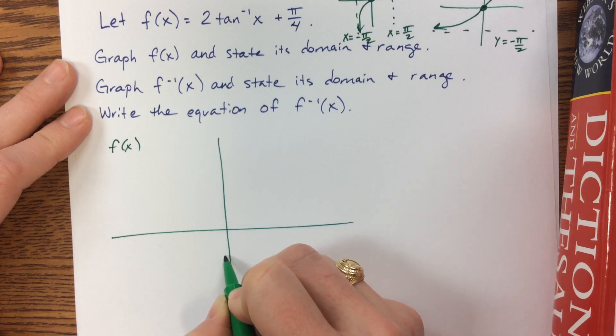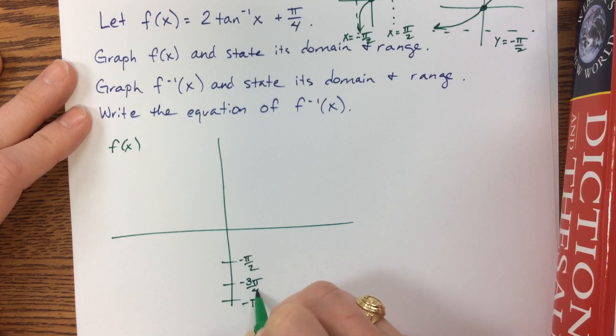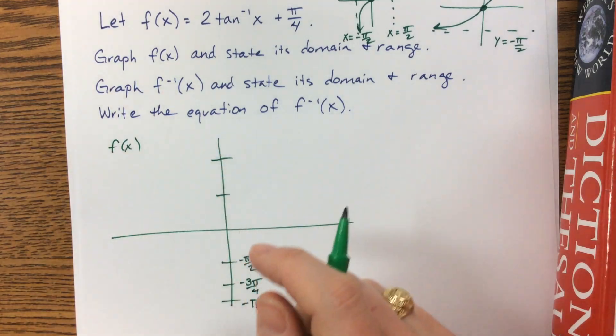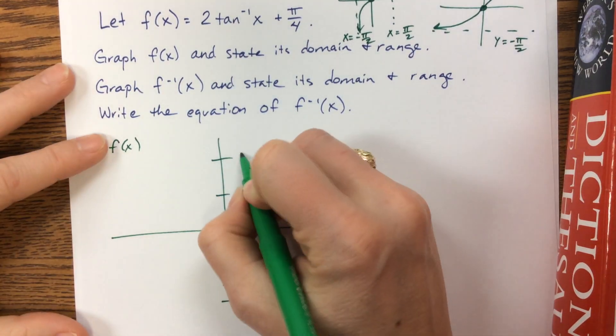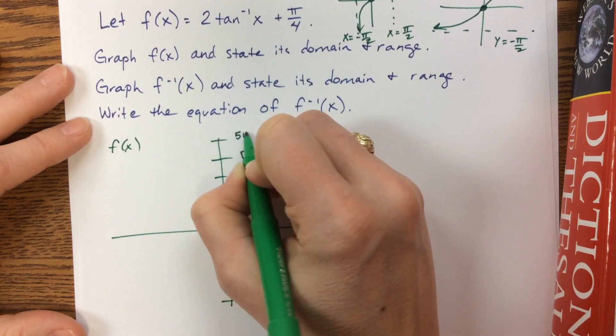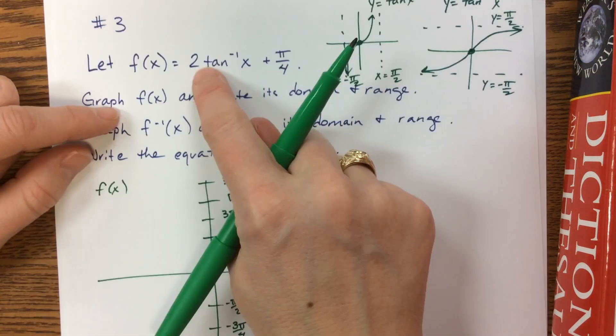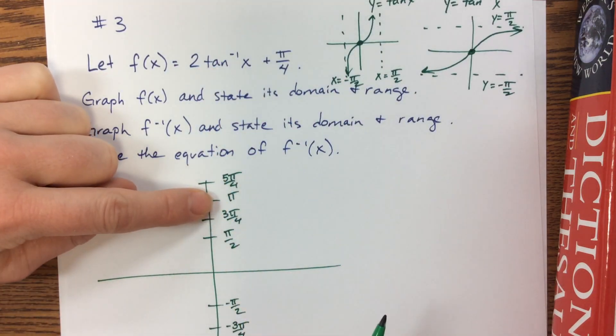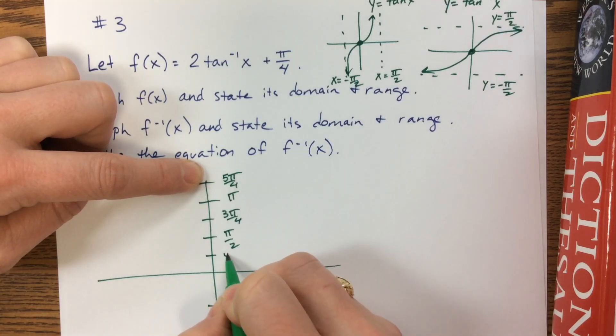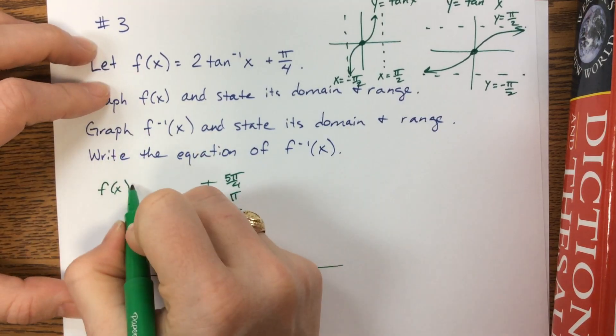If this is negative π, this would be negative π/2, halfway through here is negative 3π/4. If that's π, here comes π again. So what we had done is we had stretched everything with the 2, so now we would have an asymptote at π and at negative π, but now we're shifting it all up π/4.